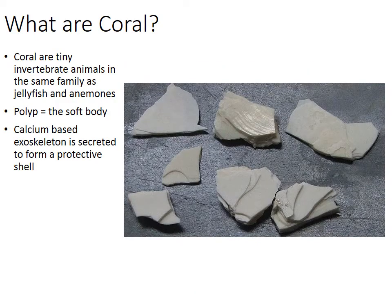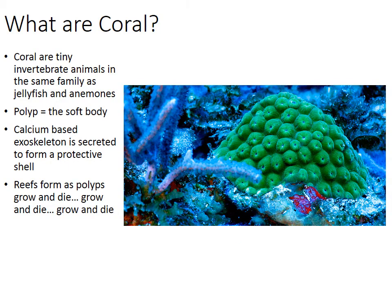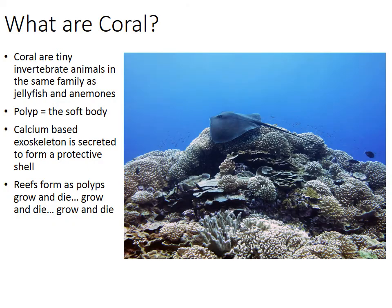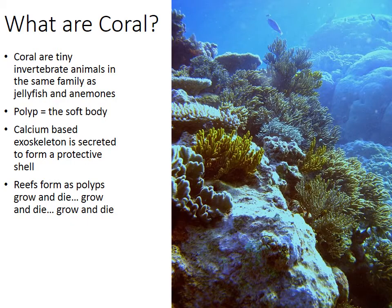Coral have a shell — a calcium-based exoskeleton, calcium carbonate — and they secrete this protective shell as a way to better defend themselves against their predators. As time goes by, coral reefs begin to form as polyps grow and die and their shells are left behind. Over time, reefs develop into the coral reefs that we're typically used to seeing.